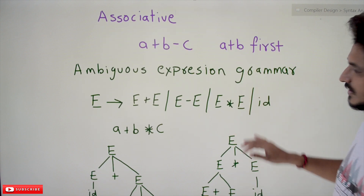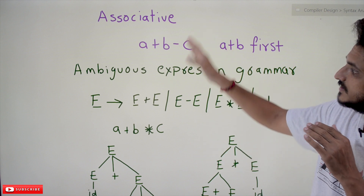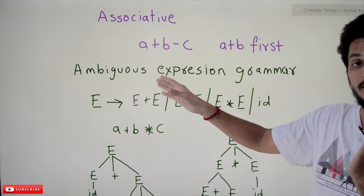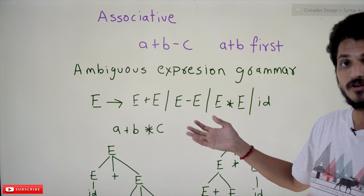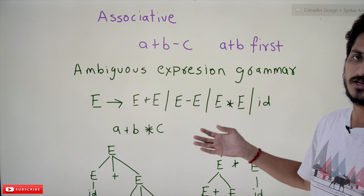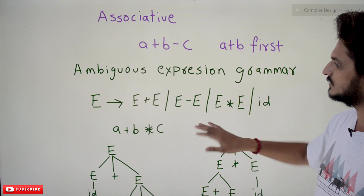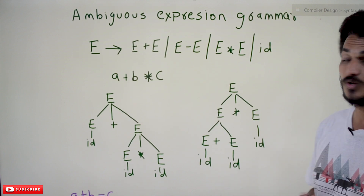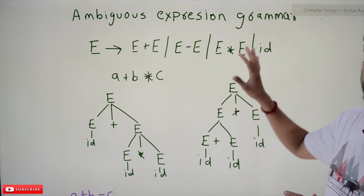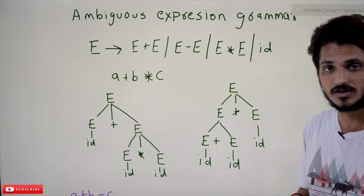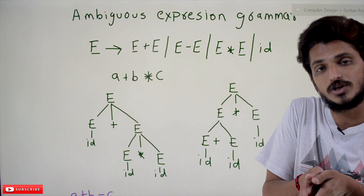In this class we are going to discuss what happens if you don't follow these conditions — if you write some ambiguous grammar for expression evaluation, what kind of mistakes you will get. We are trying to understand just with the ambiguous grammar what type of mistakes we will get. In our next class we are going to discuss about how to modify this expression grammar into an unambiguous expression grammar that follows the precedence and associativity conditions.